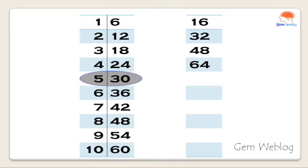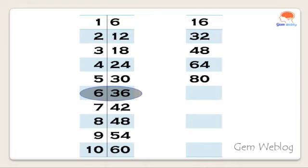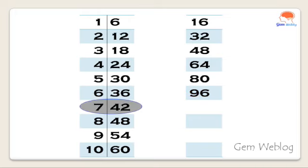For 5 × 16: 0 has been written as such, 5 plus 3 is 8. Now 5 × 16 = 80. For 6 × 16: 6 has been written as such, 6 plus 3 is 9. Now 6 × 16 = 96.